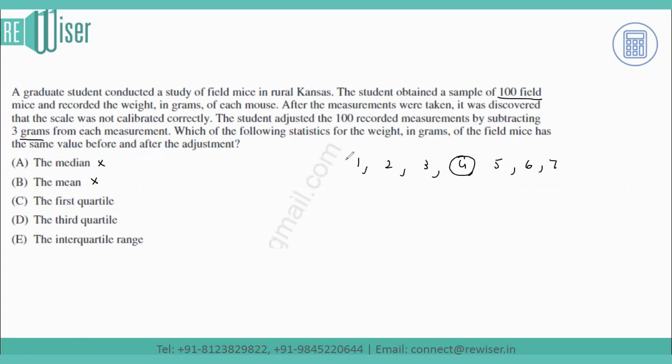Now if I have to find the first quartile of this distribution, if I make this as a first group and this as the second group, my first quartile Q1 will be 2. If I add 3 to this, even my first quartile also changes. So first quartile cannot be an answer.